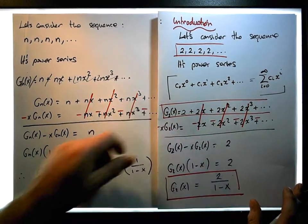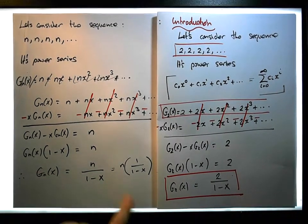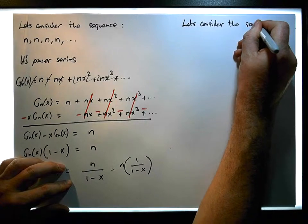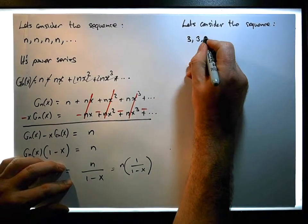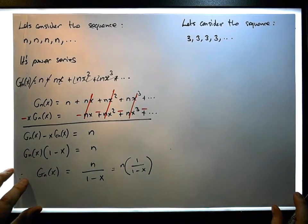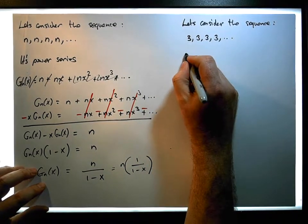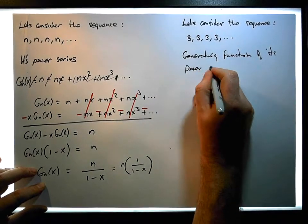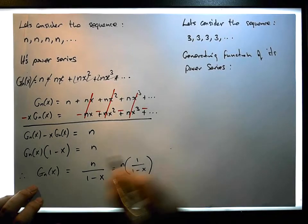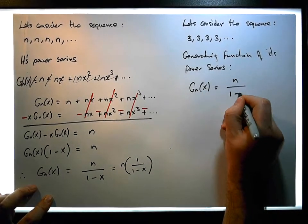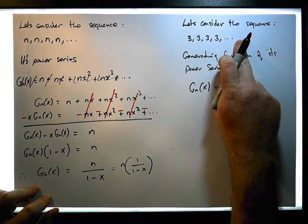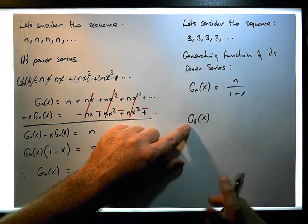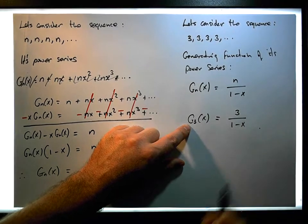So if I want to calculate the generating function of the constant sequence 3, 3, 3, 3, and so on — we know that g_n(x) is simply equal to n over (1 minus x). The constant term throughout the sequence is 3, so g_3(x), the generating function for the sequence of constant threes, is simply equal to 3 over (1 minus x).